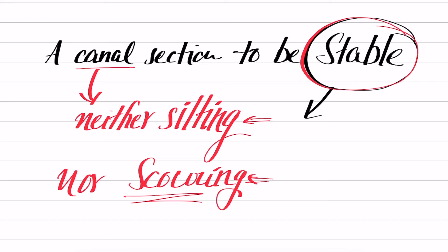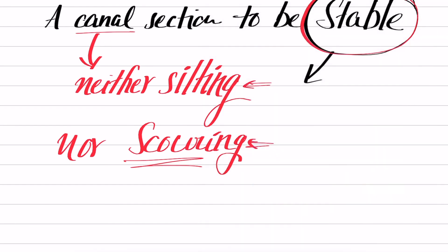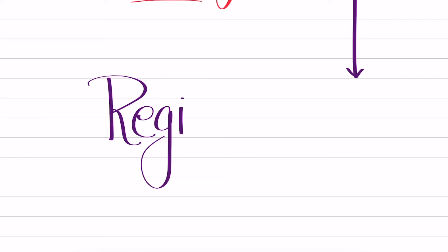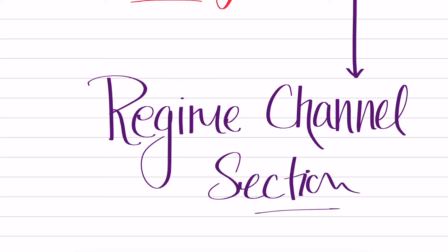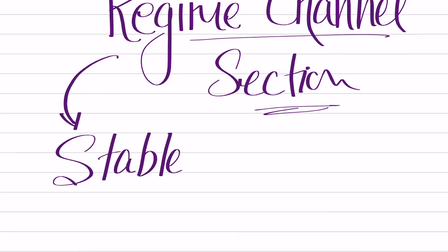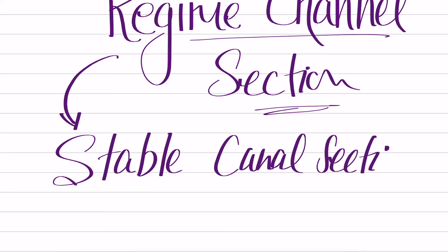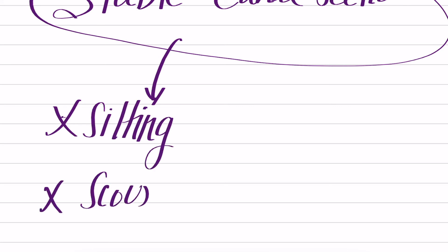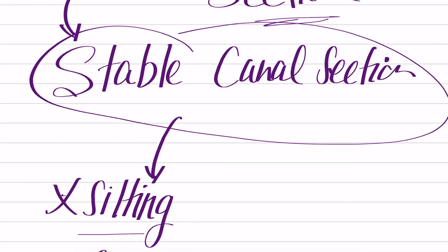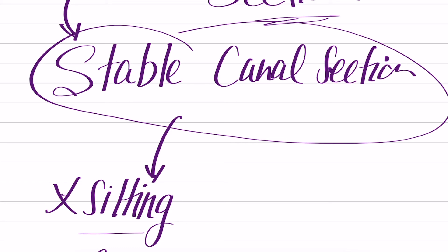In terms of irrigation canals, this stable canal section is referred to by a term called the regime channel. A regime channel section is nothing but a stable canal section — one where there is neither silting nor scouring. This is what the regime canal section means.